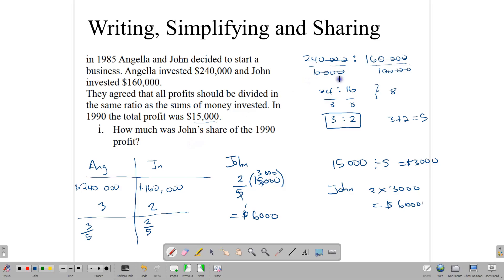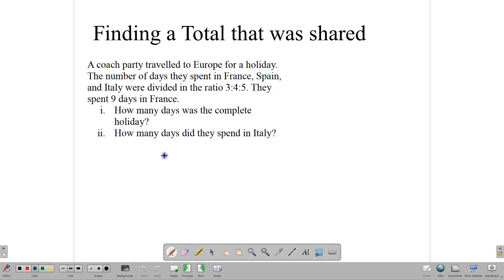This is one way in which you can use ratios: you can write them down, simplify them, and share something in that ratio. Of course, if you wanted to find Angela's amount, then we would simply say 3 times 3,000 in this part. Now let's look at another question which asks something a little differently.